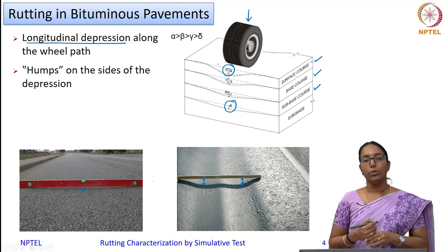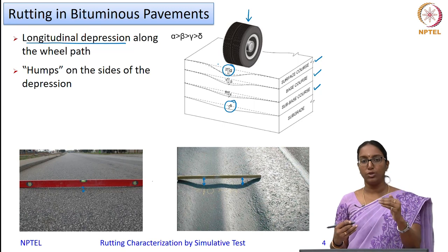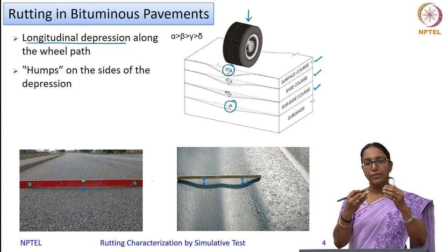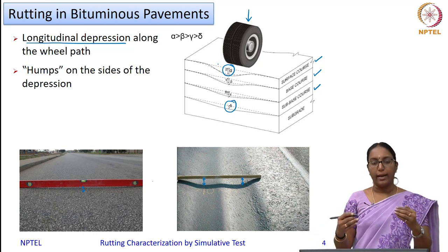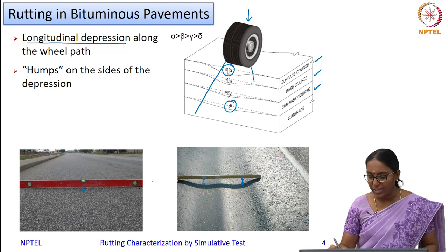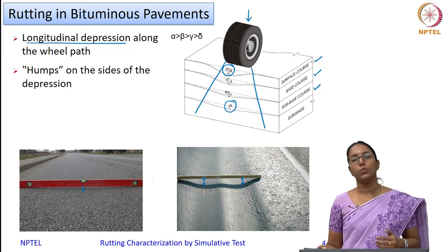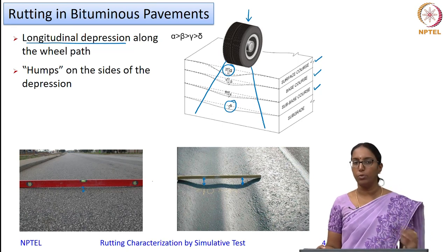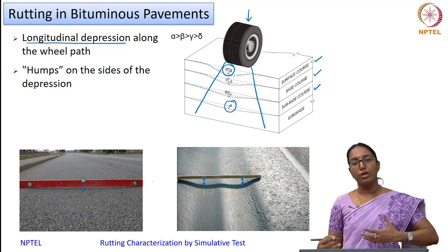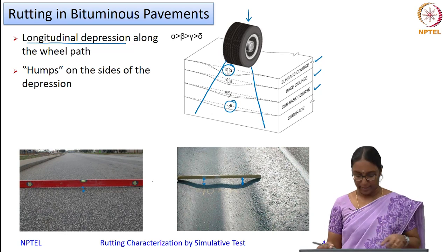The load pressure or load intensity is maximum at the top where your wheel load is in contact, and it gets distributed downward so that the pressure decreases with depth. The chances of deformation to the top layers will be much higher compared to the bottom layers. What you see is an accumulation of all these deformations which is manifested on the top surface in the form of a rut.